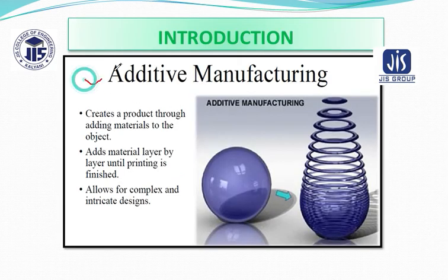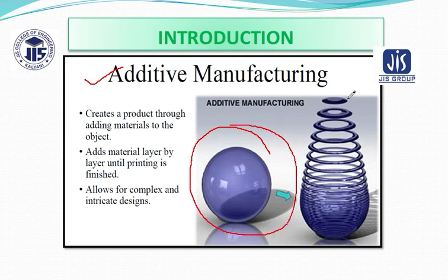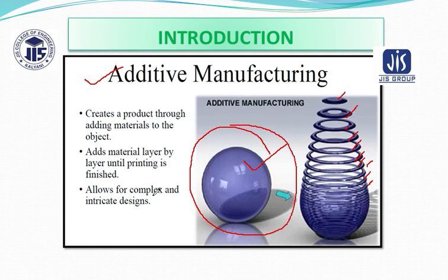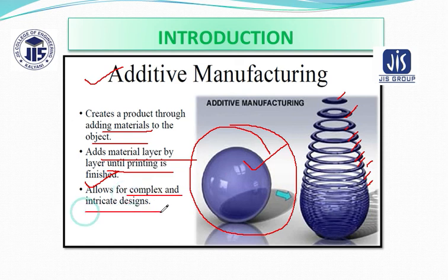In the additive process, you can see the additive process product being formed. So many slices are there — one by layer they are deposited one after another to gain a particular shape. Additive manufacturing creates a product by adding materials to the object. You can see here adding of material is occurring: add material layer by layer until printing is finished, and it also allows for complex and intricate designs.